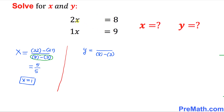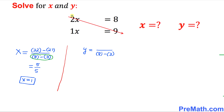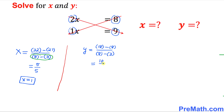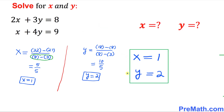Since we are solving for y this time, we are going to hide the y variable and repeat the same cross multiplication process. Multiplying from left to right: 2 times 9 is 18, put it in parentheses, minus, then the other way around: 8 times 1 is 8 in parentheses. Simplifying: 18 minus 8 is 10 divided by 5, so y equals 2. Thus x equals 1 and y equals 2 — that is our answer.